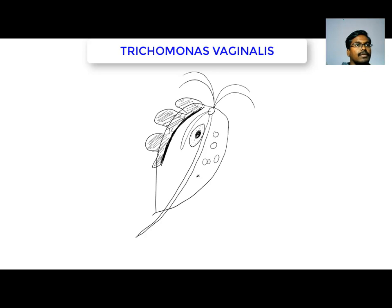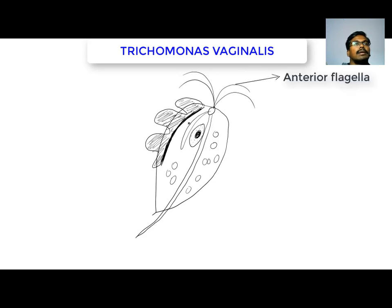These are the food vacuoles. The food vacuoles contain food particles which are ingested, and they also contain bacteria which have been engulfed. Now we will label everything. There are two pairs of anterior flagella.